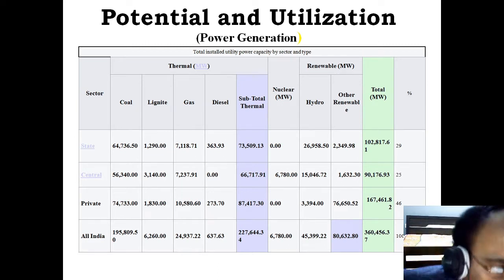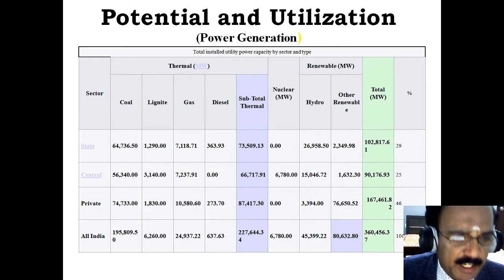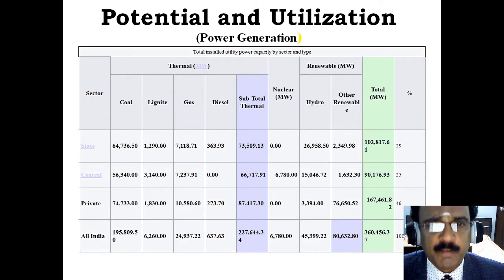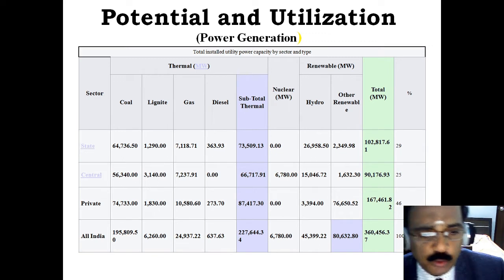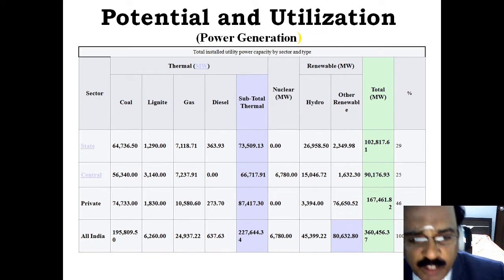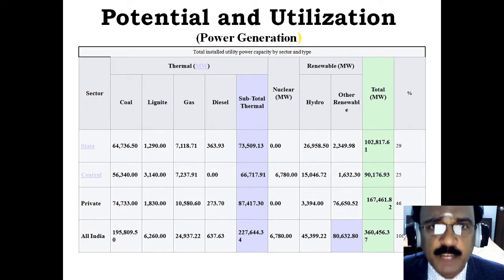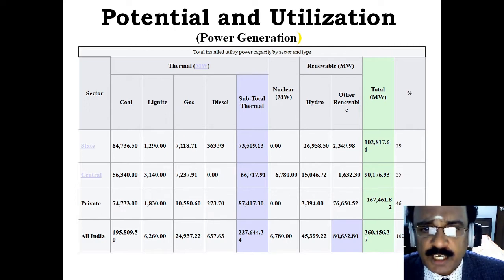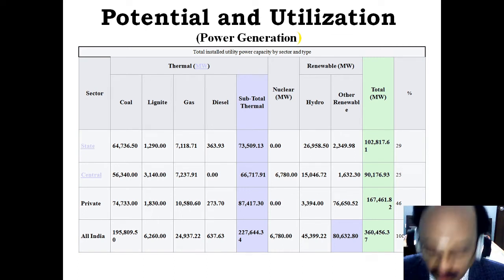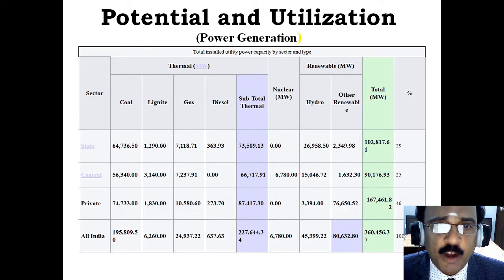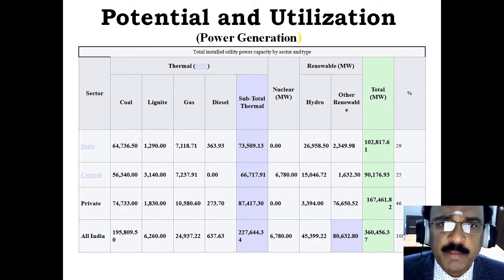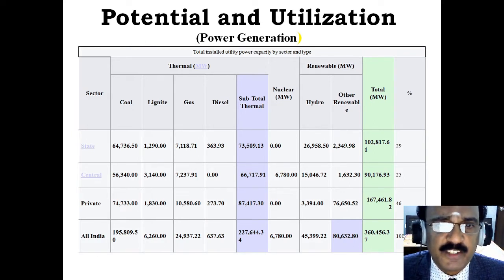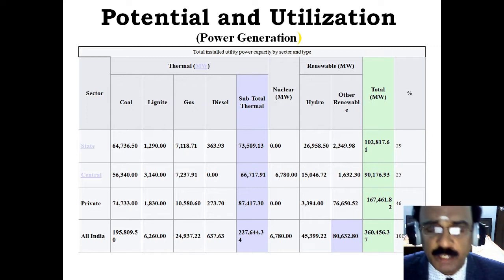We have the potential utilization of various sources at the sector level: state, central, private, and all-India together. From thermal power, we derive energy from coal, lignite, gas, and diesel. From renewable sources including nuclear, hydro, and other renewables, we have the total installed utility power capacity by sector and type with reference to thermal and renewable energy sources.